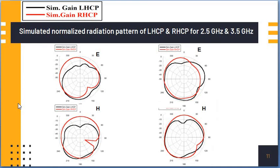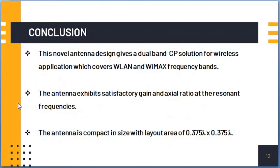This is the simulated normalized radiation patterns of left-hand circular polarization and right-hand circular polarization for the resonating bands 2.5 GHz and 3.5 GHz. There is some tilt in the radiation patterns. The tilt is because of the asymmetric design that has happened in the proposed structure.